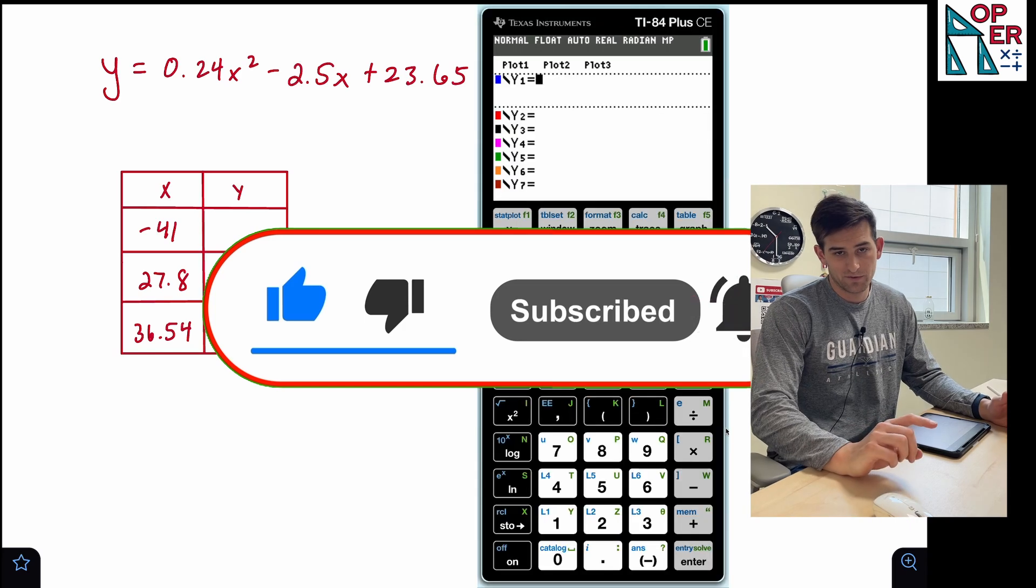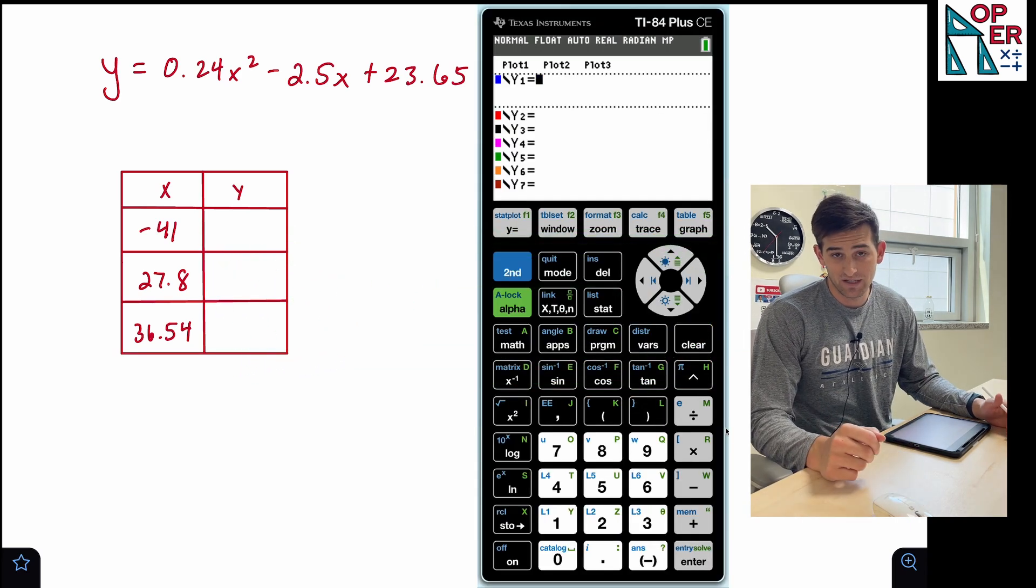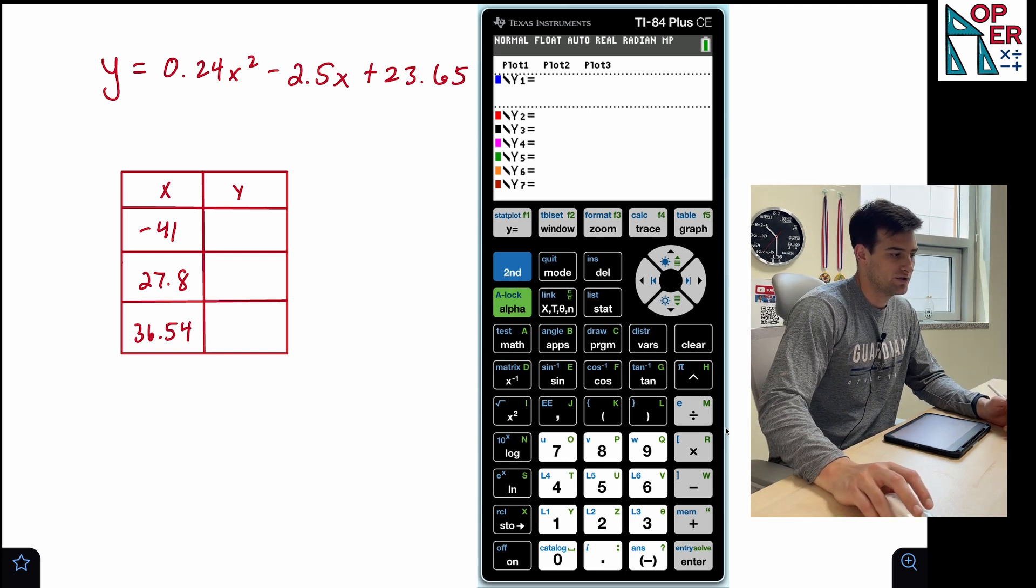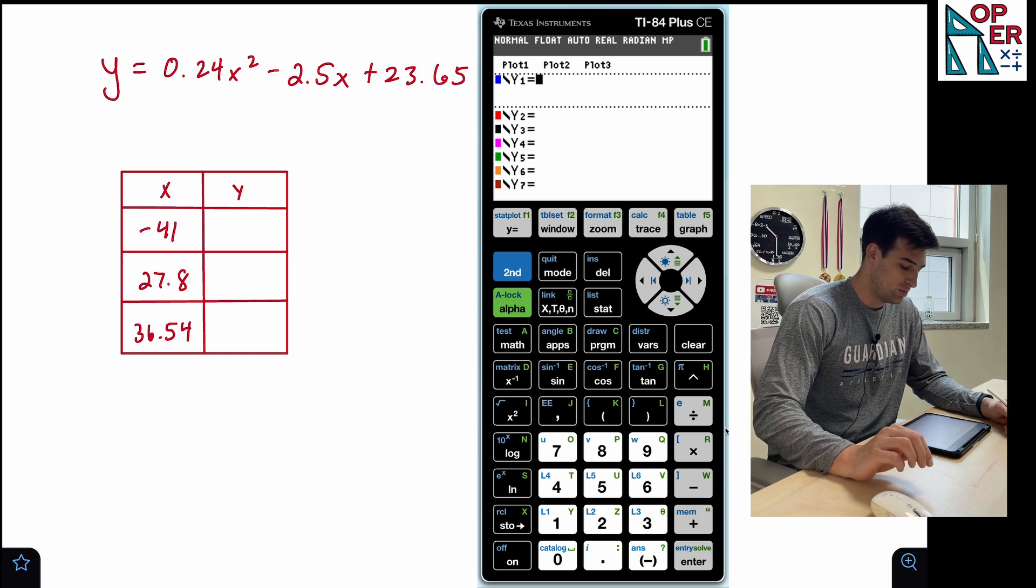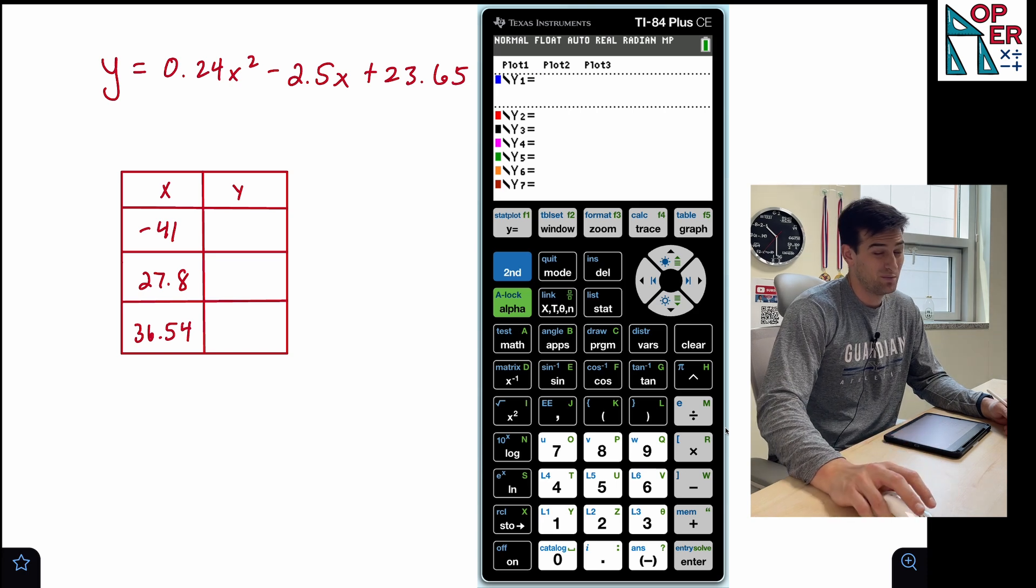Hello everyone, in this video, we're gonna talk about the difference between the auto and ask feature on the TI-84 plus CE graphing calculator when looking at our table of values. So we look at our calculator on the screen and also we see on the screen this equation that we're gonna graph. That would be y equals 0.24x squared minus 2.5x plus 23.65.